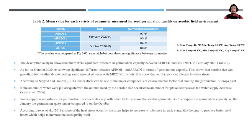In the field environment, there was a significant difference between AeronB1 and MR220CL during February 2020 as shown in Table 2. For AeronB1 and AeronB2, in terms of germination capacity, there was no significant difference, showing that aerobic rice can tolerate hot weather with the same amount of water as MR220CL. This shows that aerobic rice can tolerate water stress, which can be one of the major environmental factors limiting crop germination.